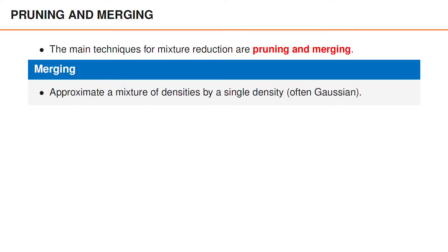Another common technique for mixture reduction is merging. Doing merging means that we approximate a mixture of densities by a single density, which is often a Gaussian density. This may sound precisely like pruning, but the difference here is that the approximation now depends on all components in the original mixture.